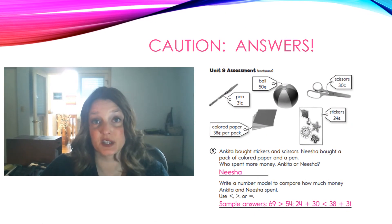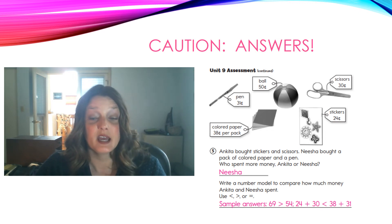Let's check your answers. For the first part, who spent more money, you should have said Nisha. When you add her items together, you get 69 cents. When you add Ankeeta's items, you only get 54 cents. So, Nisha spent more money. For the bottom part, when you compare the prices, you could have had a couple different answers. You could have wrote 69 is greater than 54. Or, you could have used number models and wrote 24 plus 30 is less than 38 plus 31.